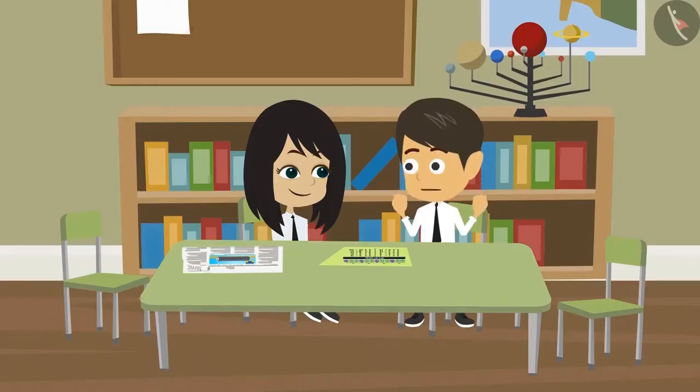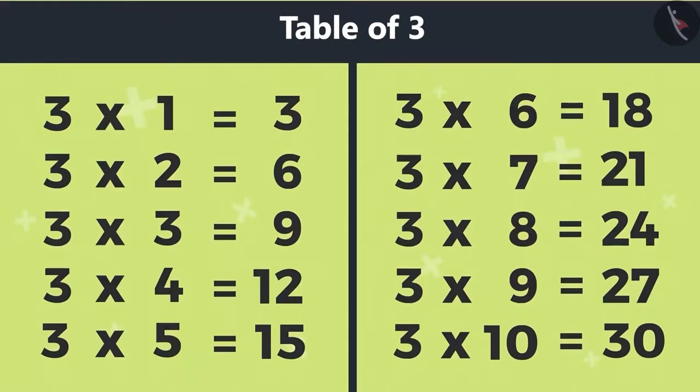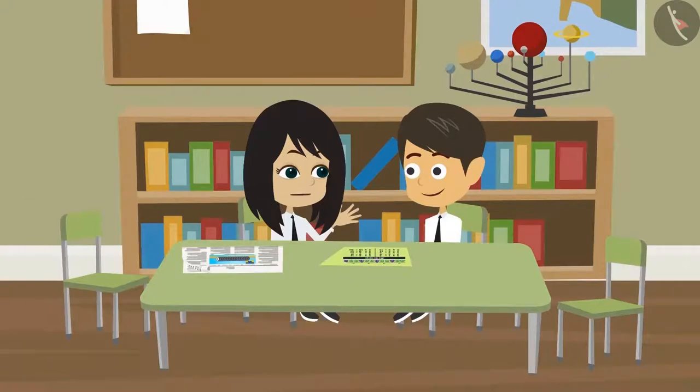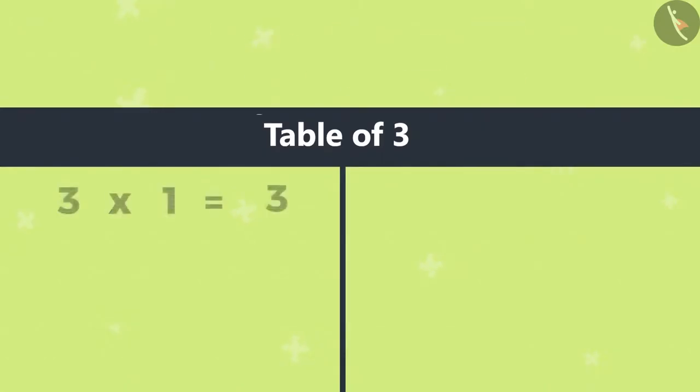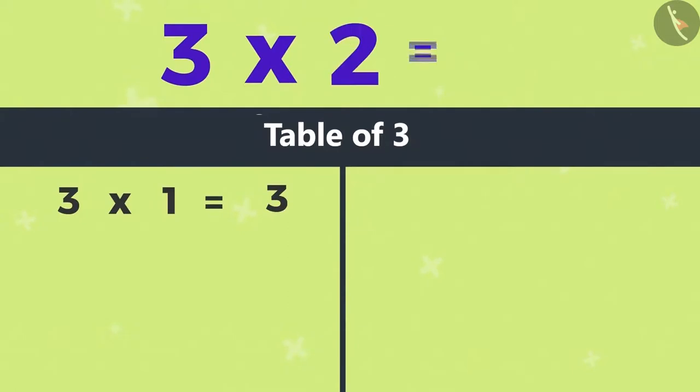We've written down the Multiplication Table of 3. Now let's memorize it so that we don't have to do these calculations. Yes, okay. 3 times 1 equals 3, 3 times 2 equals 6.